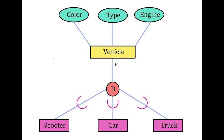The reverse process of specialization is called generalization — going from singer to an artist entity type. Simply think of specialization as a top-down approach and generalization as a bottom-up approach. This is shown in the EER model with a circle and curved line pointing towards the subclasses from the superclass.